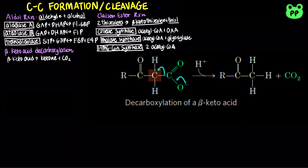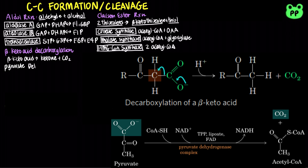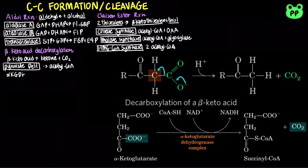Examples include pyruvate dehydrogenase, which converts pyruvate to acetyl-CoA. It takes place under aerobic conditions, in between glycolysis and the citric acid cycle. Alpha-ketoglutarate dehydrogenase converts alpha-ketoglutarate to succinyl-CoA, which takes place during the citric acid cycle.